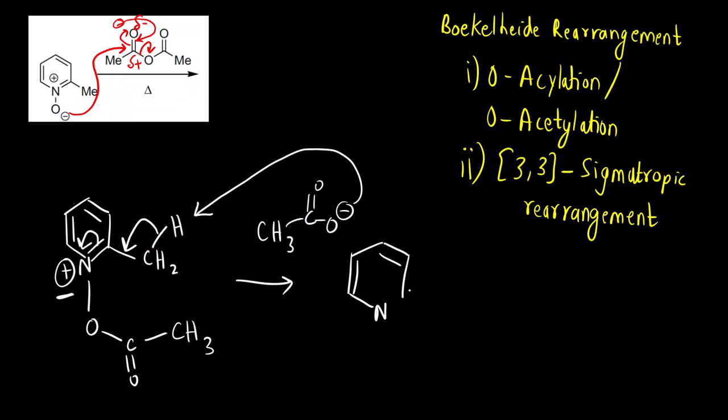So what happens is this proton is abstracted and there is a slightly rearranged product that we get. Here, there is double bond CH2. Carbon nitrogen double bond will now become single bond. Then, we have O-C double bond O-CH3.